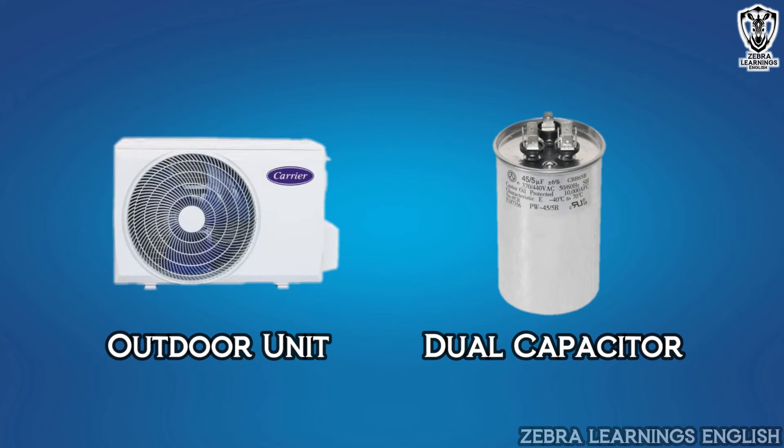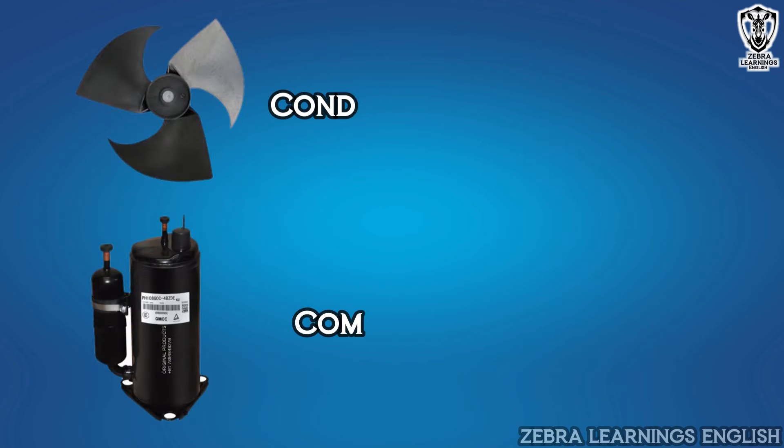We are going to learn about dual capacitor wiring diagram used in AC units. AC units have a compressor and fan motor. Both of these components require a capacitor.